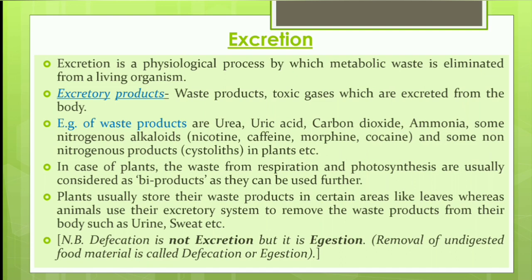Some non-nitrogenous products like resin are also excreted in plants. Waste from respiration and photosynthesis are usually considered byproducts as they can be used further. Plants store waste products in certain areas like leaves, while animals use their excretory system, producing urine and sweat. Note that defecation is not excretion but ejection — defecation removes undigested food, while excretion removes metabolic waste.